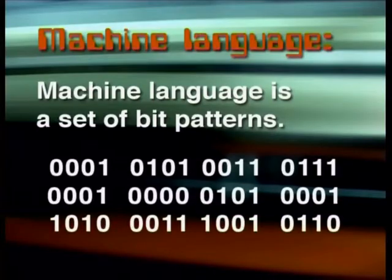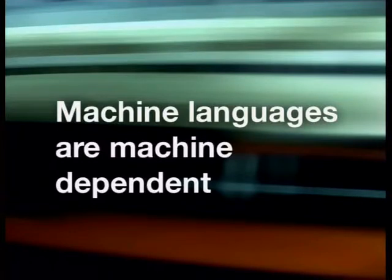A program is a set of machine language instructions that a computer executes one by one. When programs were first developed, they were all written in machine language. Now we write programs in high-level language — that's the language we all understand. A computer only understands machine language, which is a set of specific bit patterns, each one representing a different instruction for a specific computer. That means machine languages are machine-dependent. Are you saying that machine language is a particular set of codes that can only be used by one type of computer? Exactly. Computers with different CPUs can't understand each other's machine language. For instance, the machine language of an Intel Pentium CPU can't be understood by an AMD CPU.